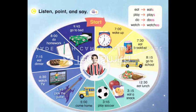He wakes up at 7:30 in the morning. He goes to school at 8:15 in the morning. He eats lunch at 12:30 in the afternoon. He eats a snack at 3:15 in the afternoon. He plays soccer at 3:45 in the afternoon. He comes home at 5 o'clock in the afternoon. He plays the guitar at 5:45 in the evening. He watches TV at 6:30 in the evening. He eats dinner at 7:15 in the evening. He does homework at 8 o'clock at night. He goes to bed at 9:45 at night.